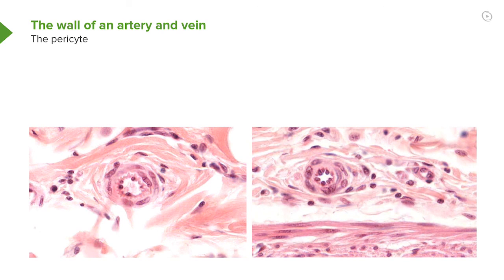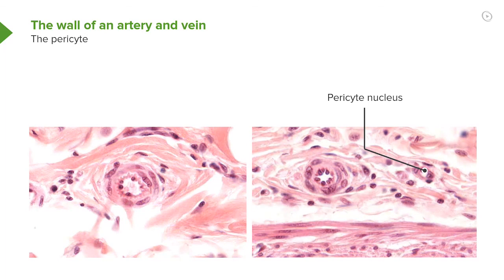But just on the outside of this very small vessel—it's a little capillary, actually—is another nucleus we call the nucleus of the pericyte. This pericyte is very important. It wraps around very small vessels, particularly capillaries, and it has a number of functions.